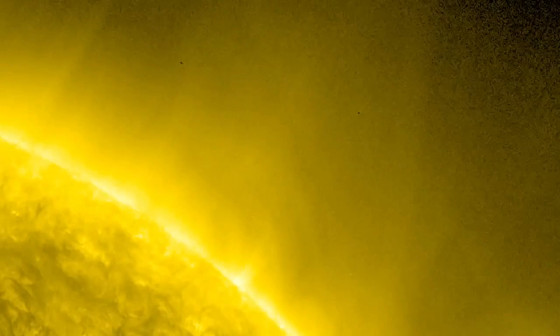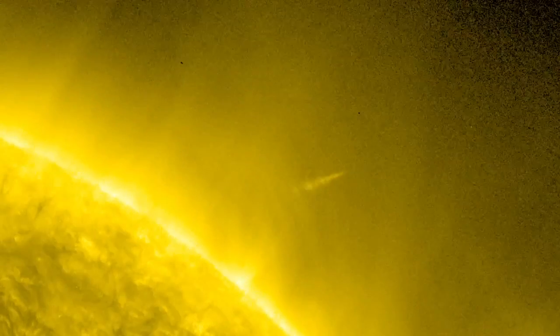Comet Lovejoy, which reached perihelion on December 15, 2011, is the best-known recent Kreutz group sungrazer, and so far it is the only one that NASA's solar-observing fleet has seen survive its trip around the Sun.